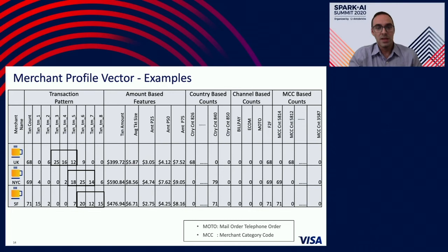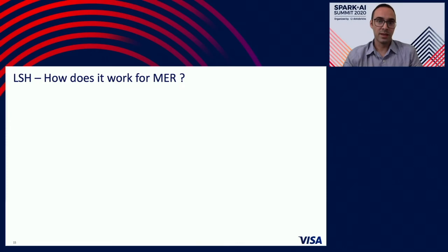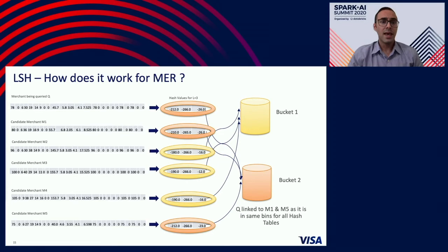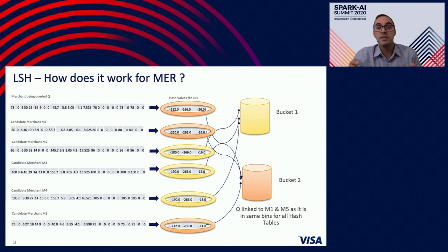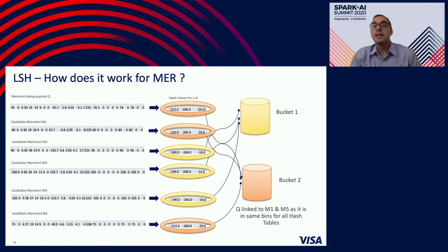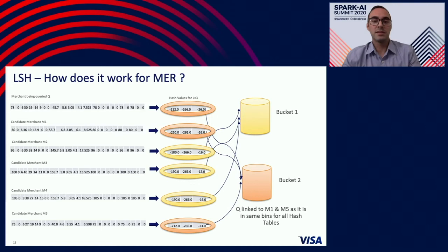Now let's look at how the LSH algorithm works in our case. On the left you see the merchant profile vectors. These are the new merchants that appear in our system. Merchant M2, M3, and M4 have very similar merchant profiles, so when run through the algorithm, the model assigns them hash values that are very close to each other, and they end up in one bucket. Similarly, M1 and M5 have a very similar merchant profile and end up with similar hash values in a different bucket. When we find our missing merchant Q, its profile looks very similar to M1 and M5, and the LSH algorithm assigns them to the same bucket. We then use further matching techniques like merchant location and merchant name to get a very high-probability match.